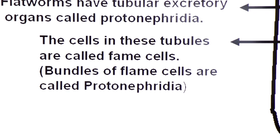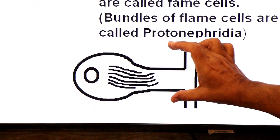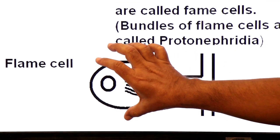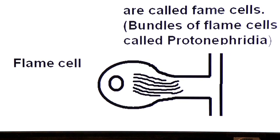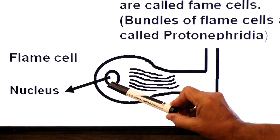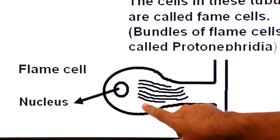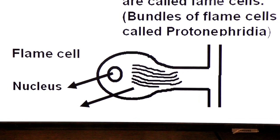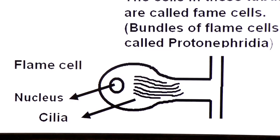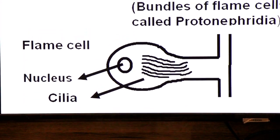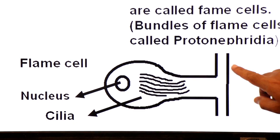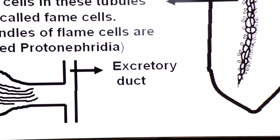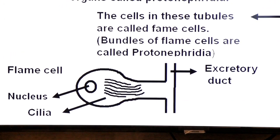Now we will discuss the diagram of a flame cell. This is a bulb-like cell — it is also called a bulb cell and also a flame cell. This is the nucleus of the flame cell; flame cells are nucleated cells. In their cytoplasm, you can see a tuft of cilia. When these cilia are beating, their movement looks like the flame of a candle — that is why they are called flame cells. A bundle of flame cells is called protonephridia. By using their flame cells they excrete ammonia, so they are ammonotelic in their excretion.